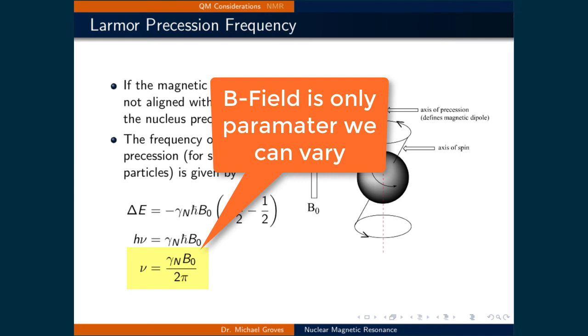So solving for the precession frequency gives the gyromagnetic ratio times the magnetic field divided by two pi. Again, note that the frequency, which is dependent upon the energy gap between the two states, is determined by constants that are defined by the nuclei, as well as the strength of the magnetic field. As the magnetic field increases, so does the Larmor precession frequency.